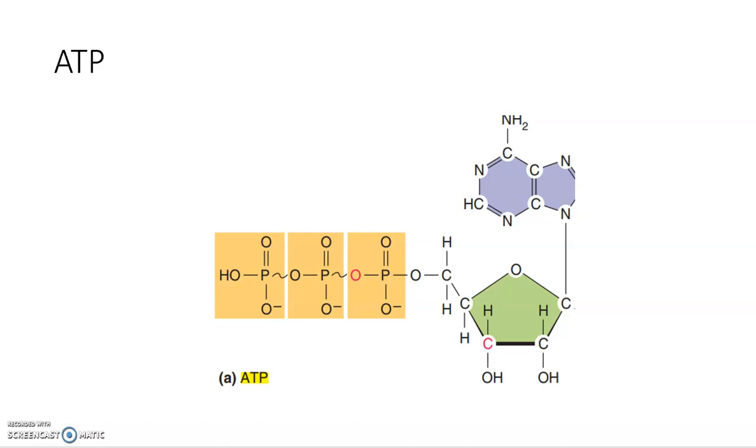ATP is the most direct source of energy for a muscle contraction. It has three phosphate bonds. The third is the highest energy one, and during a contraction, the third phosphate is popped off to phosphorylate the muscle fibers.